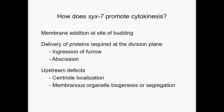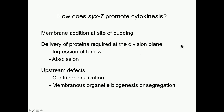I've shown that 6-7 functions to promote cytokinesis. We have a couple of models for how this might occur. The first two ideas suggest that maybe 6-7 is responsible for delivering necessary components to the division plane — such as membrane components or machinery needed to ingress the furrow or complete abscission. Alternatively, 6-7 might be functioning upstream, and the cytokinesis defect could be a consequence of something going wrong earlier in the process. I'm going to end with preliminary data that supports one of the first two ideas.